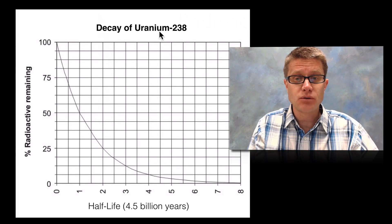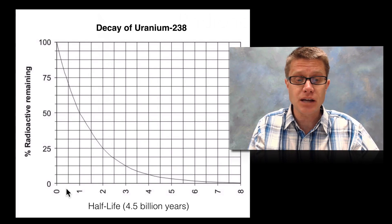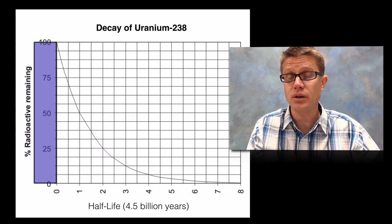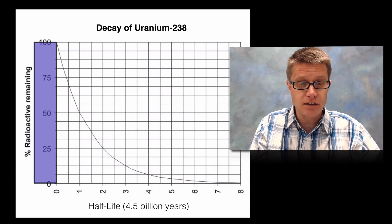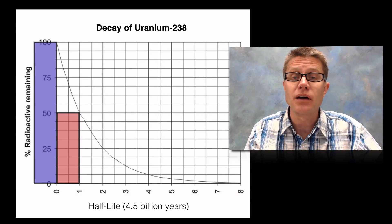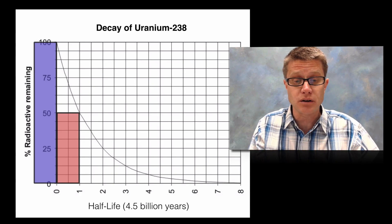And so if we look at uranium-238, at the beginning of time, so time is graphed along the x-axis, at time 0 we are going to have 100% of that uranium-238. In one half life, that is what this 1 on the x-axis stands for, we are going to have 50% of that uranium-238 decay. We are going to lose those alpha particles.